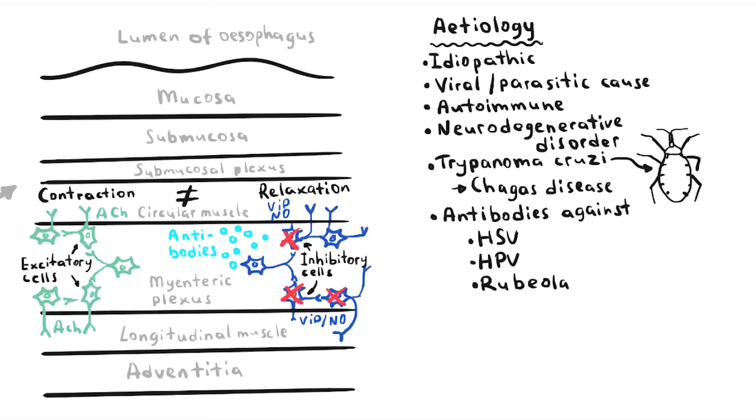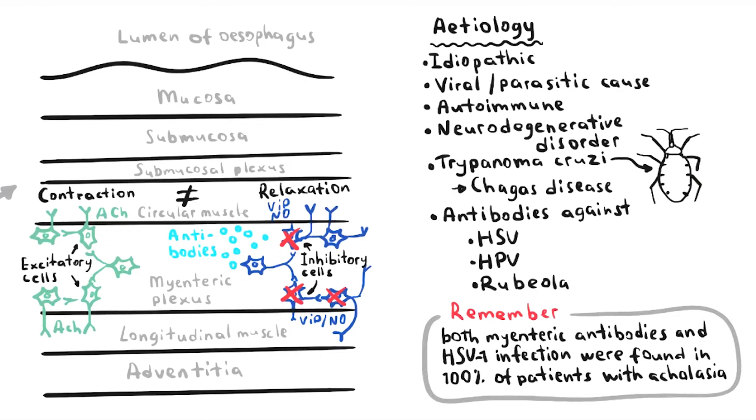Important point to remember is that both myenteric antibodies and herpes simplex virus 1 antibodies are found in majority of patients with achalasia. Patients with achalasia also have a 3 to 4 times higher risk to have another autoimmune disease.